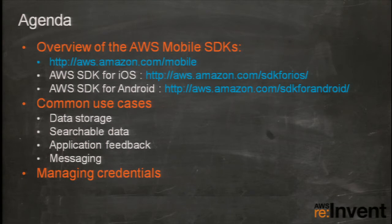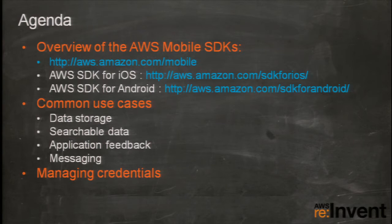Throughout the presentation there will be a number of links. If you don't get the slide deck but still want to get to the content, remember that first highlighted link — aws.amazon.com/mobile — that is the landing page for mobile. From that page, you can get to all the content and information presented in this session.